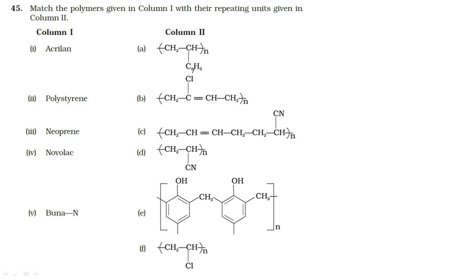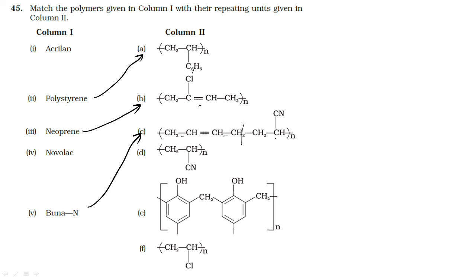Identifying polymer structures: The given structure with a phenyl side group is polystyrene. A structure with alternating double and single bonds involving 1,3-butadiene and acrylonitrile (CN group) represents Buna-N. Before polymerization, double bonds become single bonds and single bonds become double bonds during polymerization. The novolac structure, when cross-linked, becomes Bakelite.